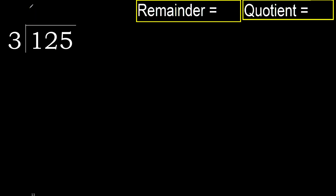3 multiplied by 4 is 12, which is not greater. 12 minus 12 is 0.